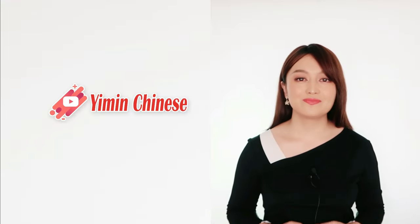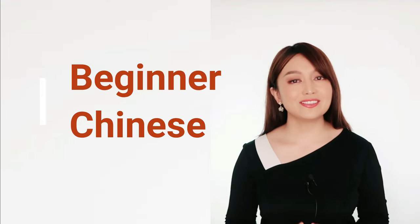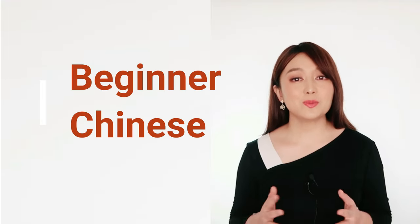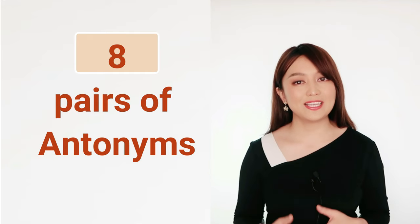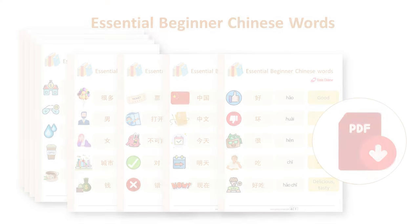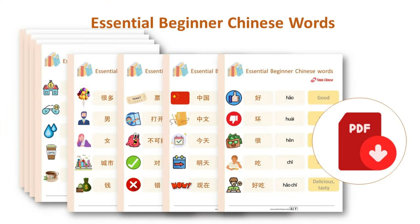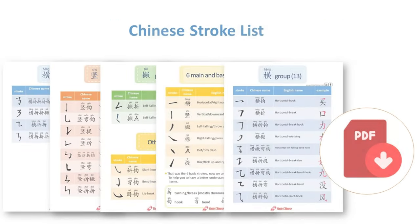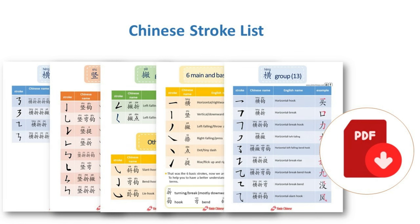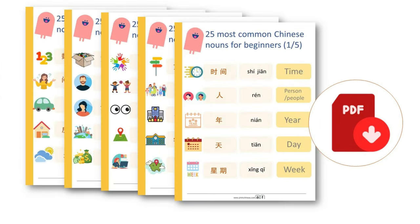你好, 我是一鸣老师. Today we are going to learn 8 pairs of common antonyms for Chinese beginners. We have some free PDF files for Chinese beginners to learn the basic and essential Chinese words and sentences. You can download them for free by clicking the link down below in the description box.